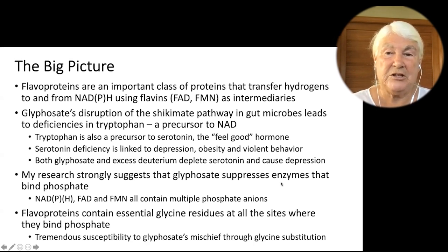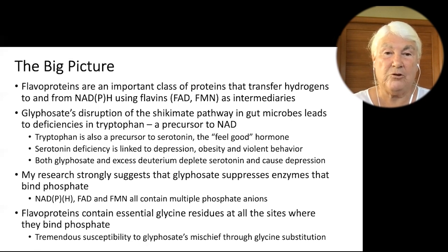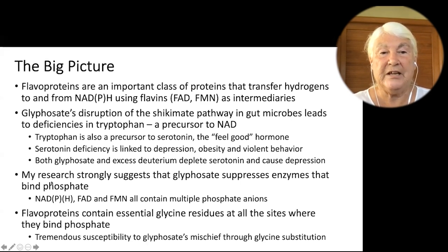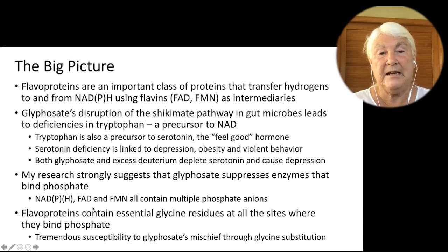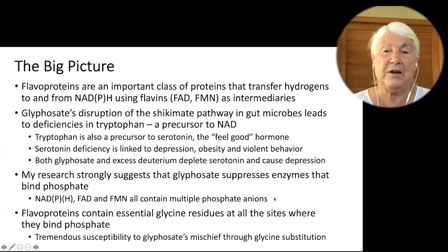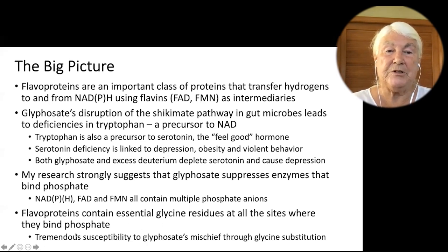My research strongly suggests that glyphosate suppresses enzymes that bind phosphate — not just through glycine substitution, but specifically at glycine positions that bind phosphate. I wrote about the flavoproteins and the sulfur system in my book — both are being disrupted by glyphosate because these enzymes all bind phosphate. NAD, NADP, FAD, and FMN all contain multiple phosphate anions, and the enzyme must bind those phosphates at sites where glycine is highly conserved. This gives flavoproteins a tremendous susceptibility to glyphosate's mischief through glycine substitution.